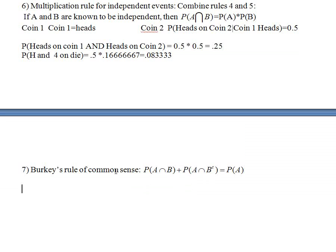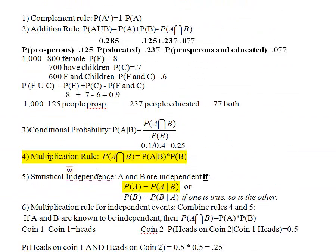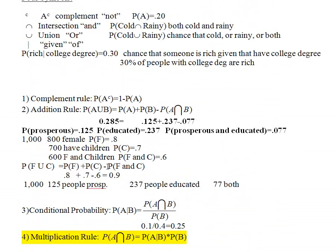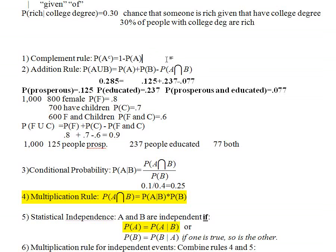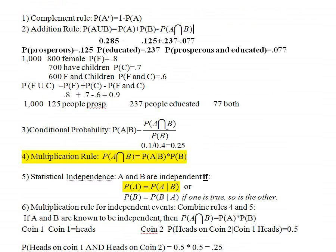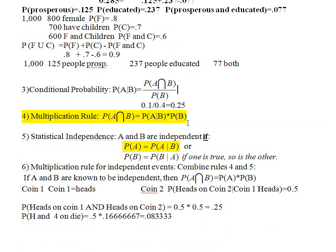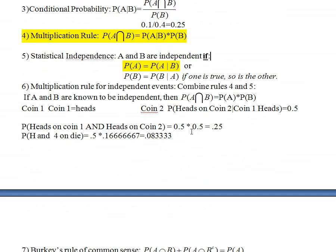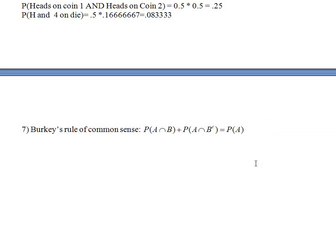In the next couple of videos we're going to look at some interesting real-world data sets and put all these rules to use. You want to have a list of these rules in front of you: the complement rule, the addition rule, the conditional probability rule, the multiplication rule, the test for statistical independence, the multiplication rule for independent events, and Berkey's Rule of Common Sense. Have all these ready for the problems we'll work in the next few lectures. Thank you.